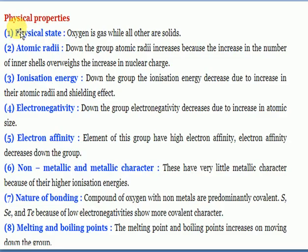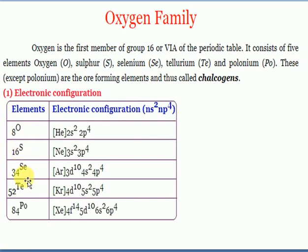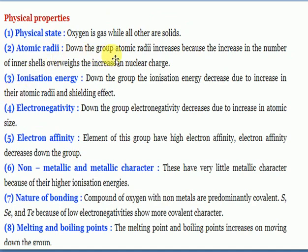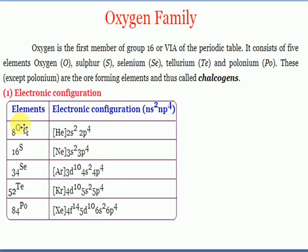Physical properties: oxygen is a gas while the other elements are solids. Regarding atomic radius - when going down the group, the number of orbitals increases. As you go from period 2 to period 6, the atomic radius increases because the number of energy levels increases, and with increasing nuclear shielding, the atomic radius increases down the group.